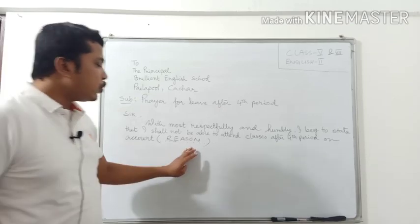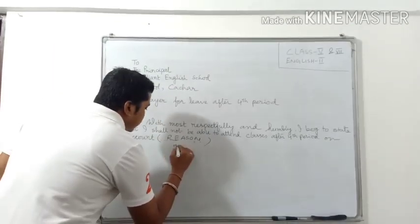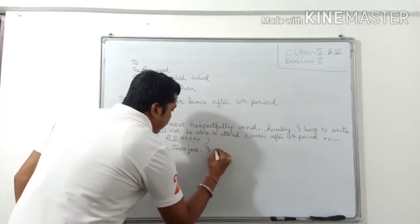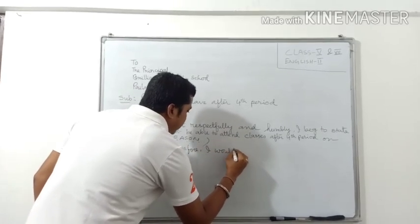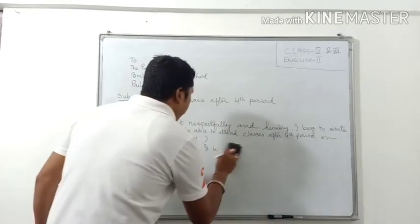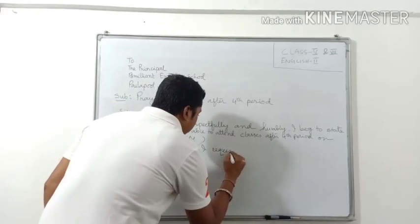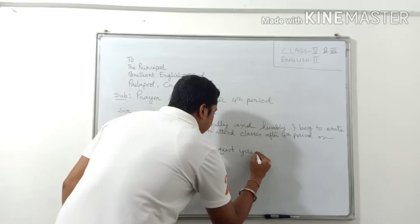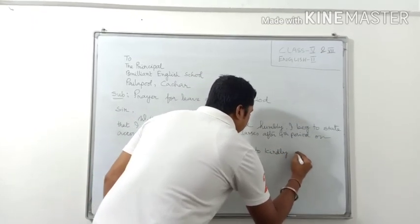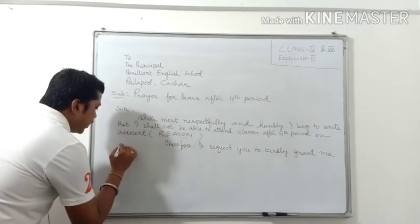Next, what you have to do? You have to change the paragraph and write. Therefore, I would like to request, or you can write, therefore, I request you to kindly grant me the leave.